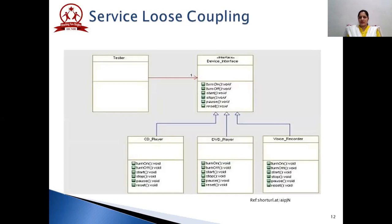Service loose coupling talks about the dependency between components. There are two types: loose coupling and tight coupling. In loose coupling, the dependency is quite less and all service components function independently of each other. In tight coupling, the dependency is much greater and at a high level. As an example from Java, there is a Java interface named 'Device' with various classes — CD player, DVD player, and voice recorder — which can function independent of the interface. This is an example of loose coupling from Java programming.